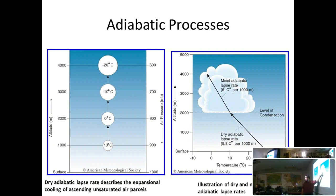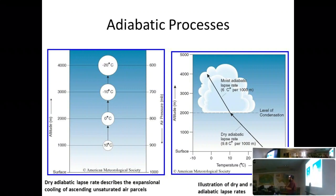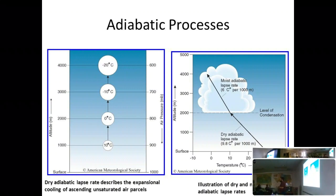When air cools to its dew point, it starts condensing out its water and you get a different, slower rate of cooling — the wet adiabatic lapse rate. The reason the rate changes is the release of latent heat of condensation. As water condenses, it releases heat, which offsets some of the adiabatic cooling, giving you a different lapse rate.